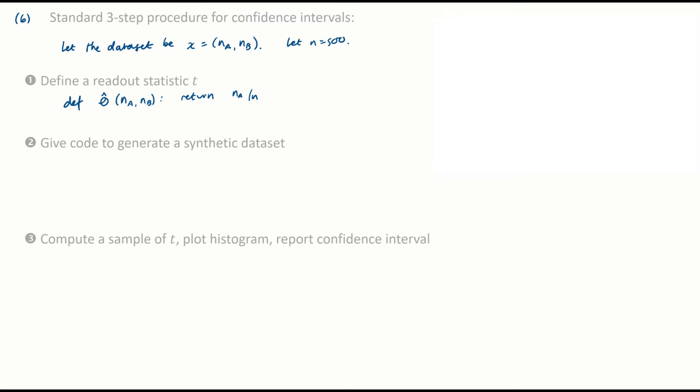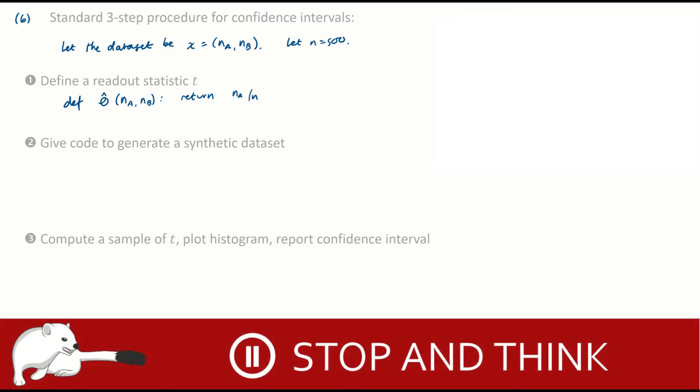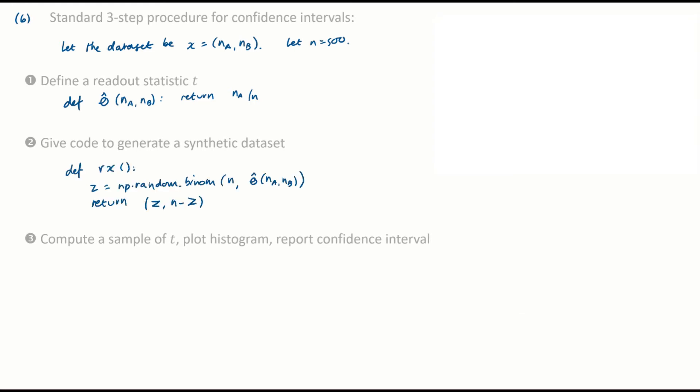Next, give code to generate a synthetic dataset. This is sensible code. The question did advise us to use a particular probability model. It told us to model Na as a binomial random variable with parameters N and theta. And this is the standard way that we can generate synthetic datasets. We find the maximum likelihood estimate, theta hat, for the data that we were actually given. And then we just replay the parametric model and it gives a random output. Again, I'm considering the dataset to be the pair Na comma Nb. So I'm going to return here the random number I generated, the binomial value comma N minus it.